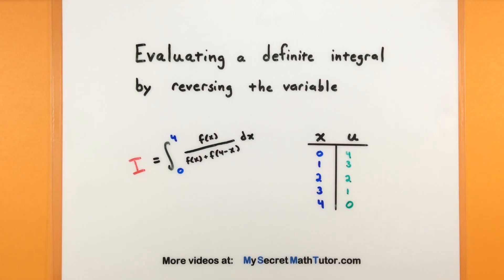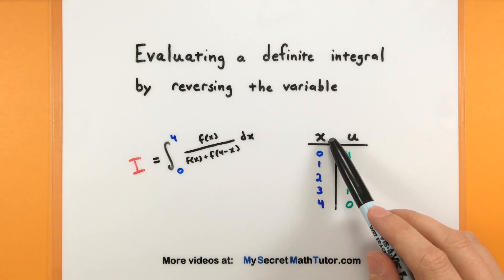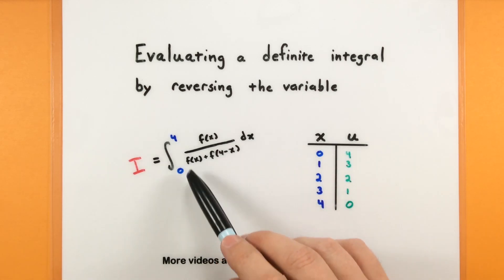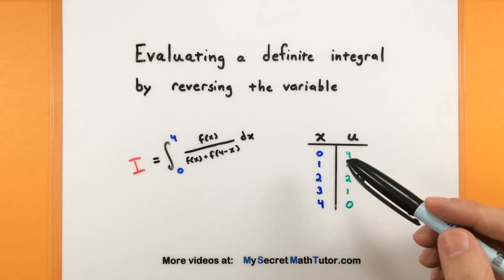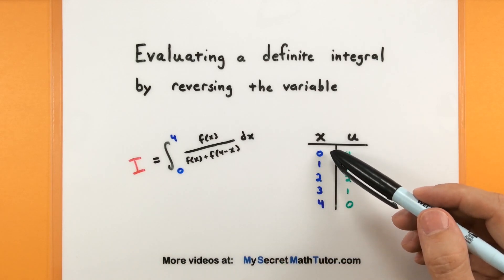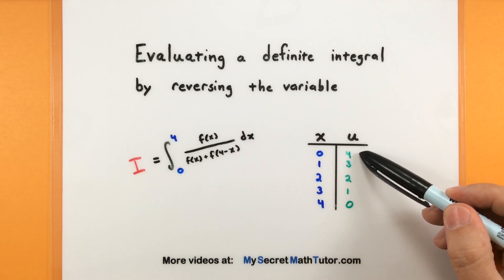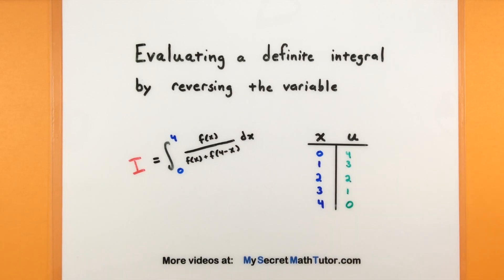Hello and welcome to My Secret Maths Tutor. In this video, we're going to work on evaluating a definite integral by reversing the variable. This is a very interesting technique. You can think of your variable like x as incrementing over certain values that come from our bounds. So x might go over the values 0 through 4, but after a substitution, they'll actually go over the values 4 through 0 — the same values but just in reverse order. Let's talk about some tips when using this technique.